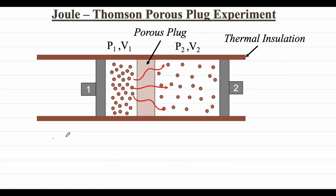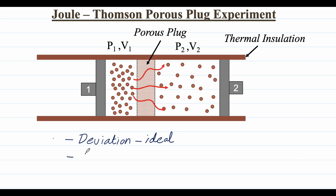The Joule-Thompson porous plug experiment is used to measure deviations from ideal behavior. It is used to quantify the deviation from ideal behavior of gases, and this deviation is quantified by using the change in temperature during the experiment. So the change in temperature is used to quantify deviation.